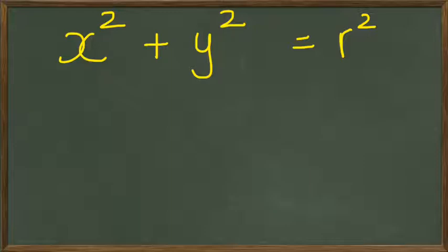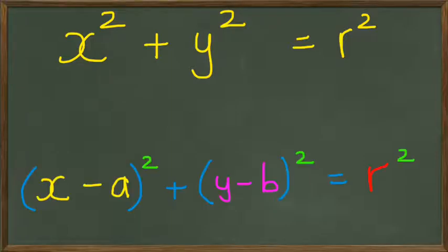Now you might also be aware that you could have another form of the general equation for the circle that could look like this: (x - a)² + (y - b)² = r².